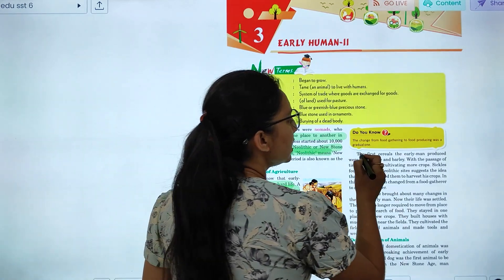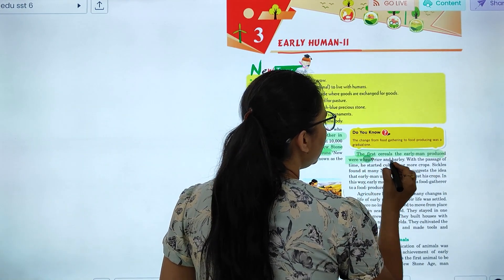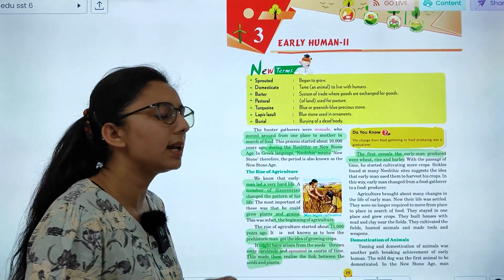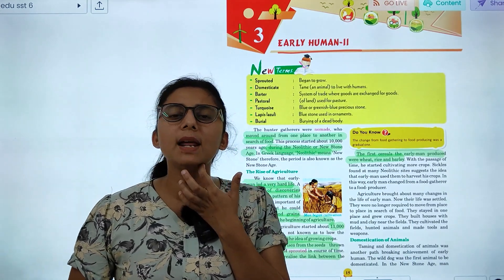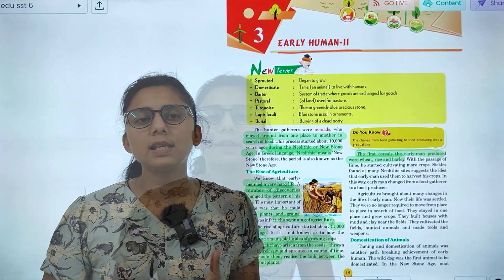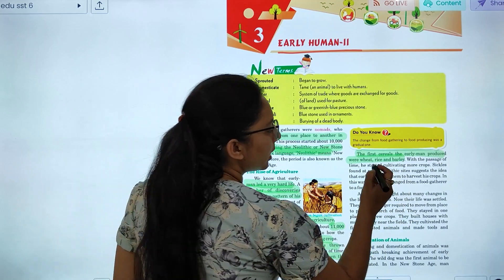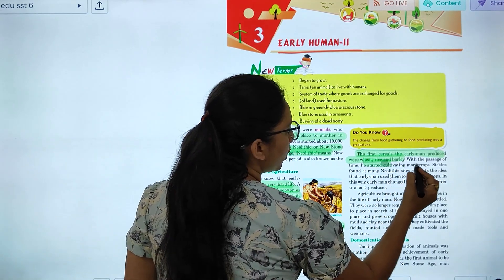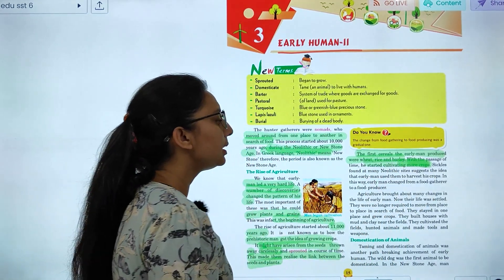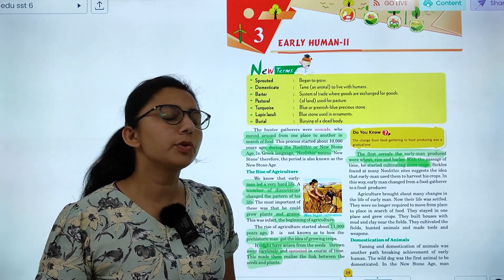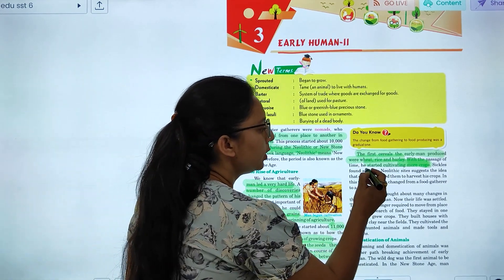Now the first cereals the early man produced were wheat, rice, and barley. The first cereals that the early man produced were wheat. With the passage of time, they started cultivating more crops.